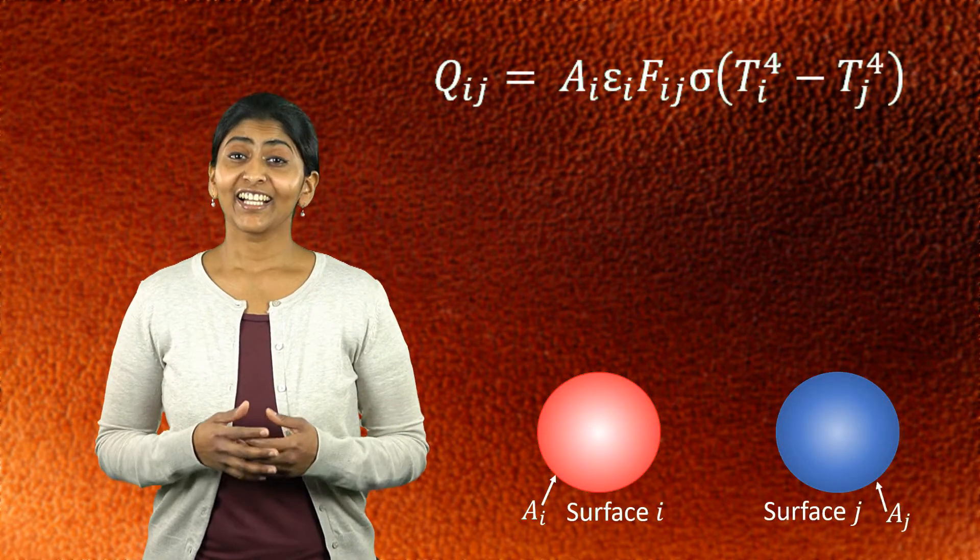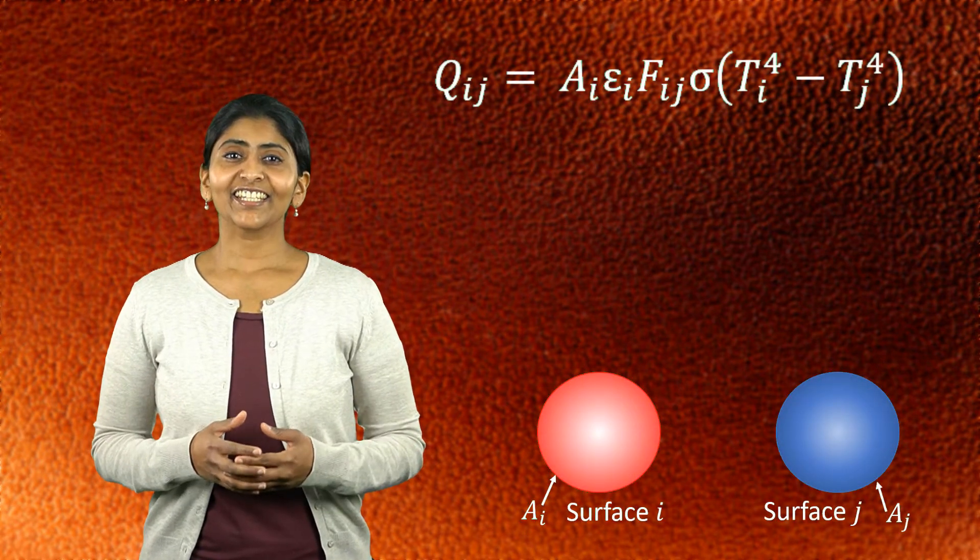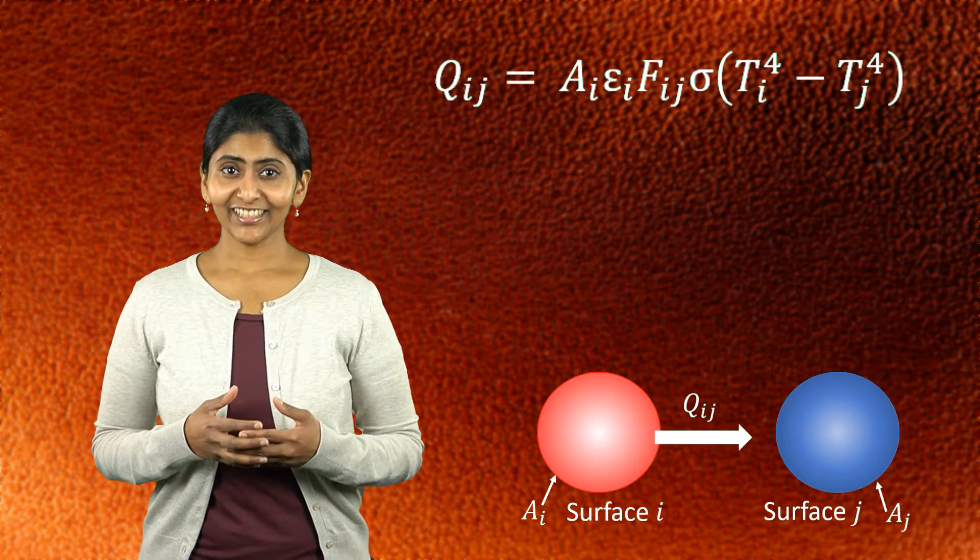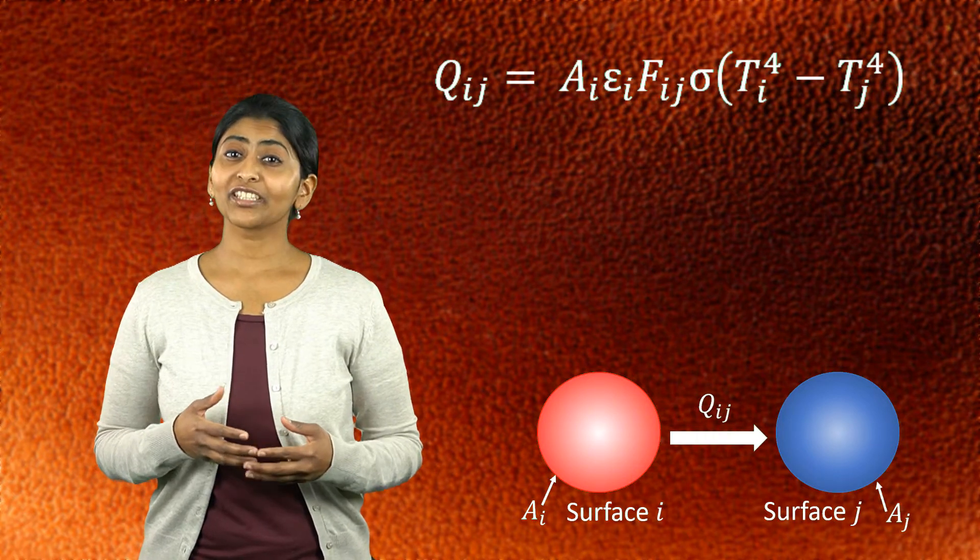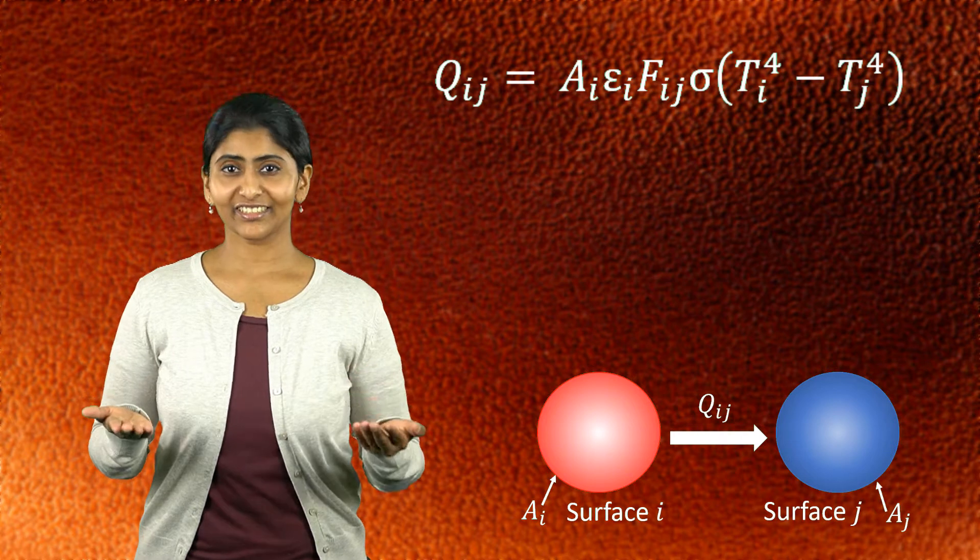So now let's look at how this radiation process is modeled mathematically. A simplified form of the equation describing radiation from one surface to another is given by this formula. Here, q_ij is the radiated heat energy that is transferred from surface i to surface j.